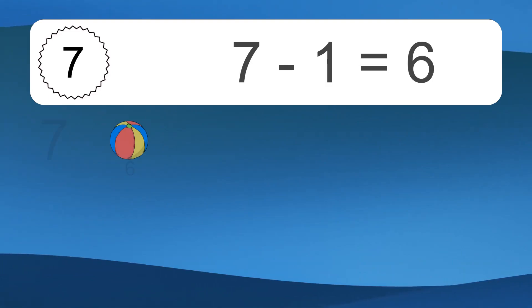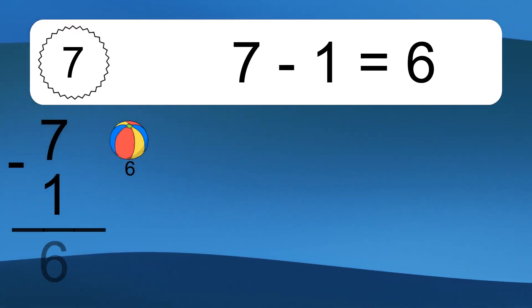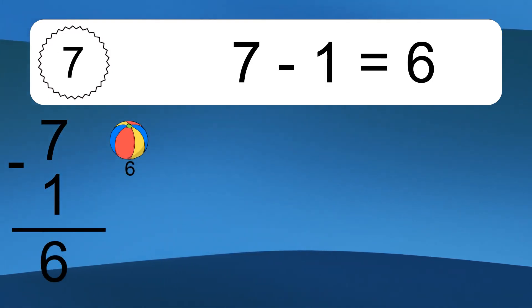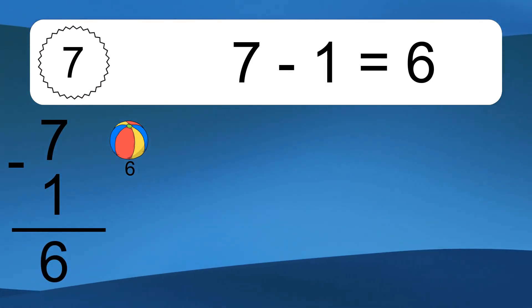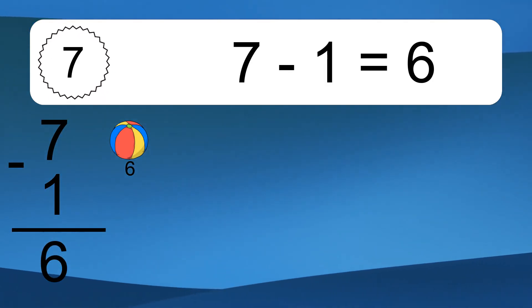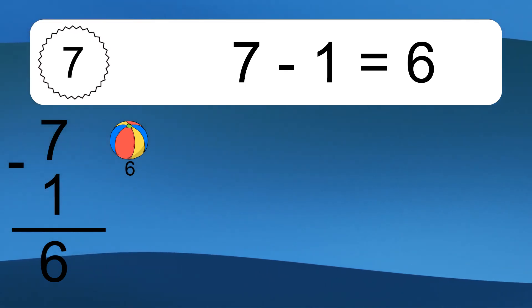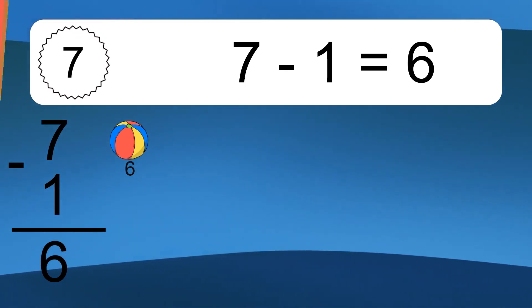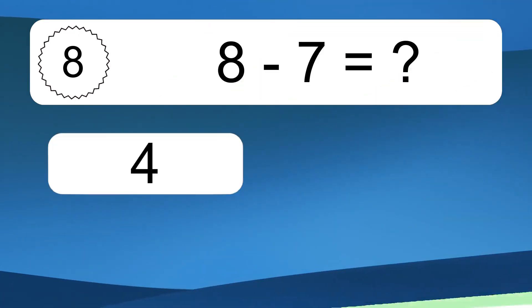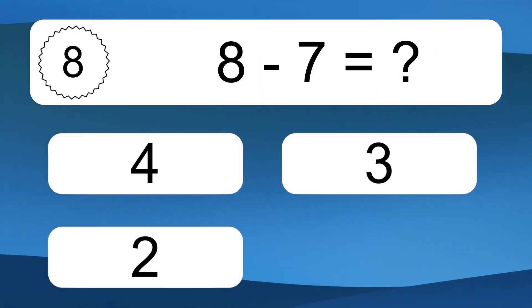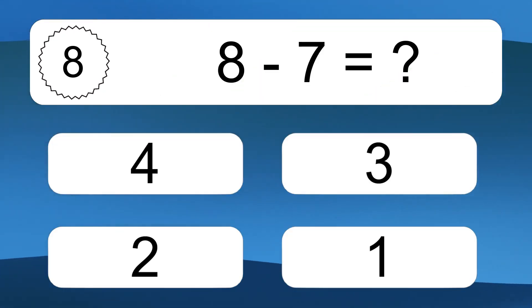7 minus 1 equals what? 7 minus 1 equals 6. Let's count it: 6.